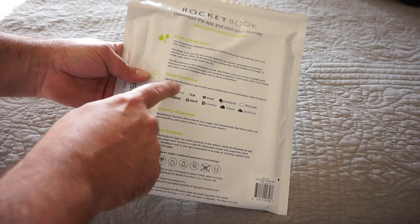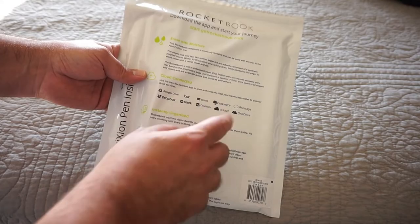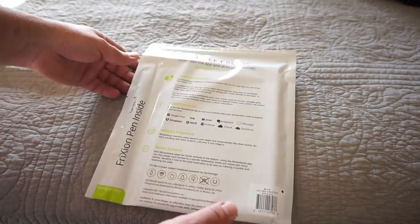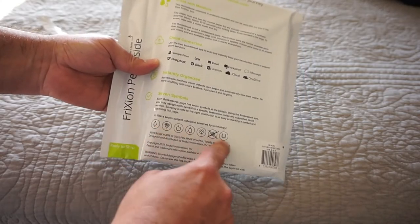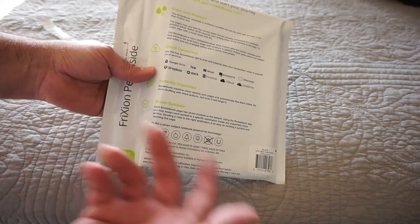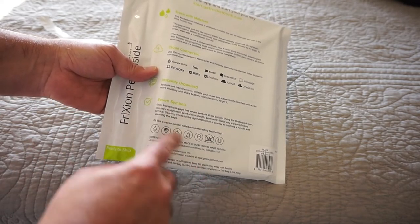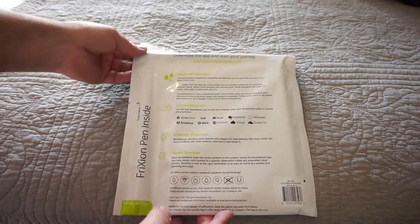You'll be cloud-connected with Drive, Dropbox, Box, Slack, Email, OneNote, Evernote, iCloud, iMessage, and OneDrive. So you can essentially send your pictures off to those places. The last thing too is depending on which icon you mark, that's going to determine where your pictures are going to go. They give you seven different symbols, and using the app, you can actually decide where those items are going to go.